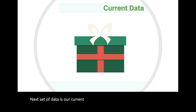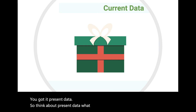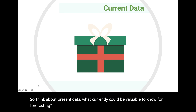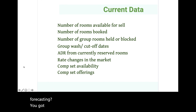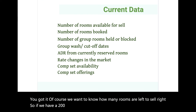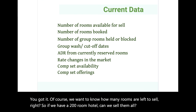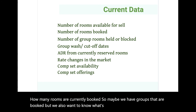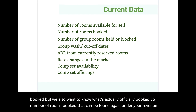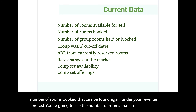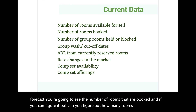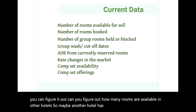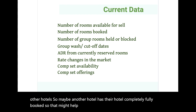The next set of data is current data — present data. Think about what's currently valuable to know for forecasting. We want to know how many rooms are left to sell. If we have a 200-room hotel, how many rooms are actually currently booked? You can find this under your revenue forecast in the sim. It's also useful to figure out how many rooms are available at competitor hotels — if another hotel is fully booked, that might help you forecast what's going to happen in your own hotel.